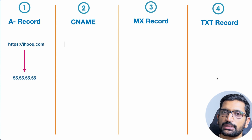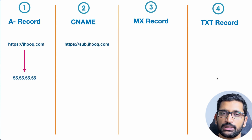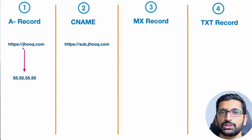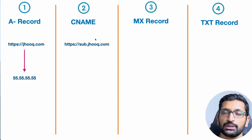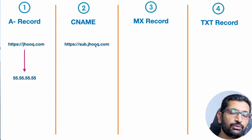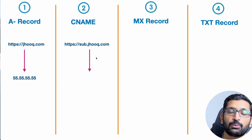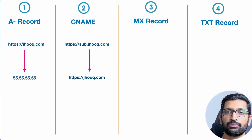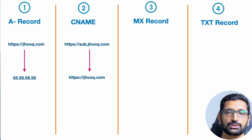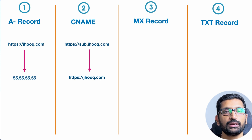The second in the list is the CNAME, which is used for subdomains. If I have a main domain which is jhook.com, with the CNAME I can create multiple subdomains under my primary domain. For example, I can create a subdomain like sub.jhook.com, and that domain can either point to my main domain jhook.com or to a different IP address. So with CNAME you can associate multiple subdomains with your primary domain.